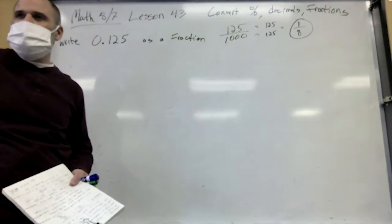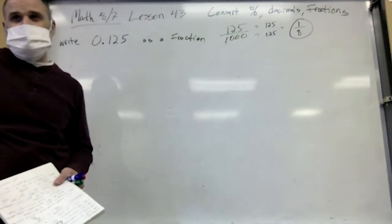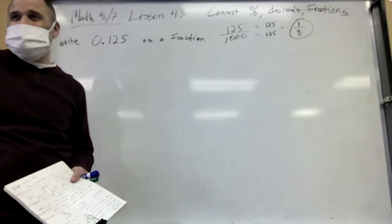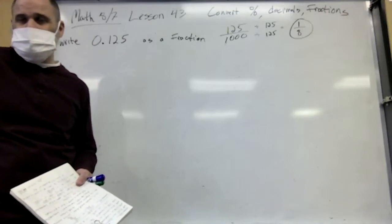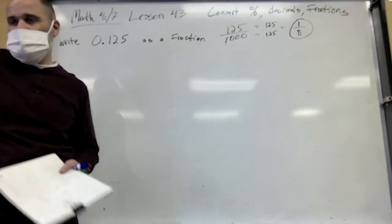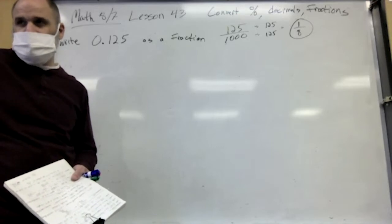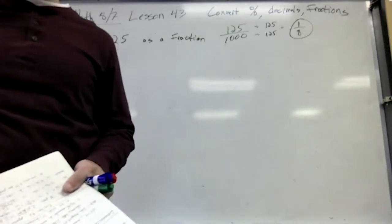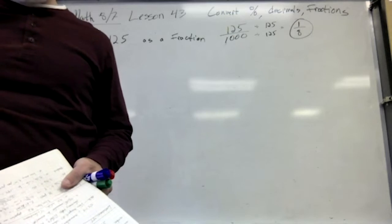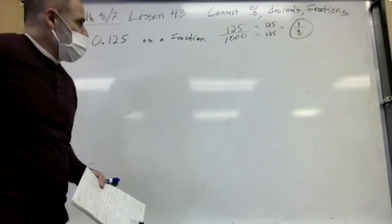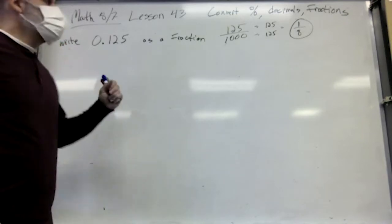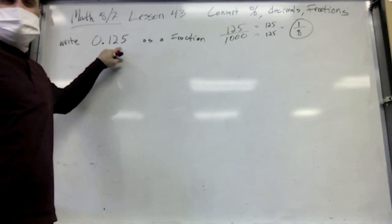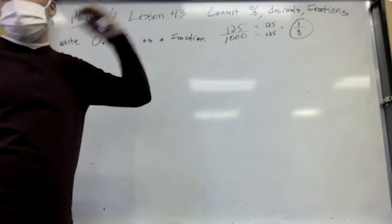Point one two five, or one hundred twenty-five thousandths, is one-eighth. What's point two five? That's one-fourth. One-eighth is half of a fourth. So point one two five is half of point two five, because twelve and a half is half of twenty-five.